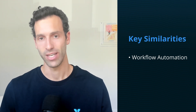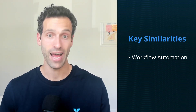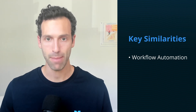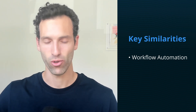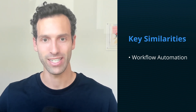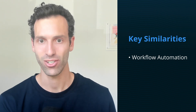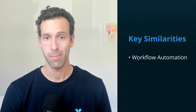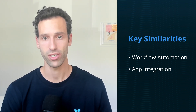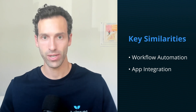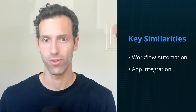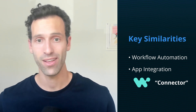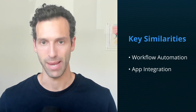In a zap, there's a trigger that triggers a set of actions that take actions in your apps. In Workato, a trigger will similarly trigger a set of actions in your apps as well. These workflows function in Zapier and Workato because each tool has built integrations with apps that you can automate. In Zapier, this is called an app. In Workato, this is called a connector. But again, the core concept is exactly the same.